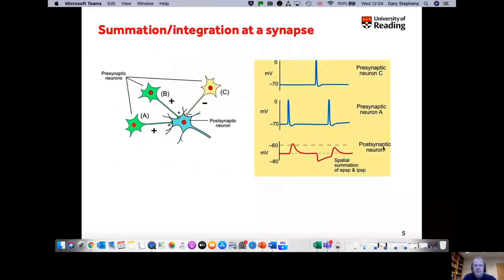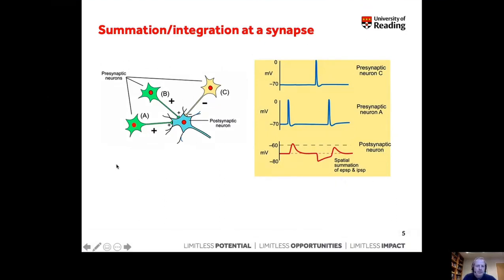Let's consider this in terms of synaptic integration. We've combined the previous two diagrams to show both excitatory inputs — shown in green, neurons A and B — and an inhibitory input into this postsynaptic neuron. An important take-home message is that we shouldn't think of neurons as receiving input from just one source. Neurons have inputs from thousands of different presynaptic neurons, and the postsynaptic neuron must integrate all of those signals and decide whether to fire an action potential at the axon hillock.